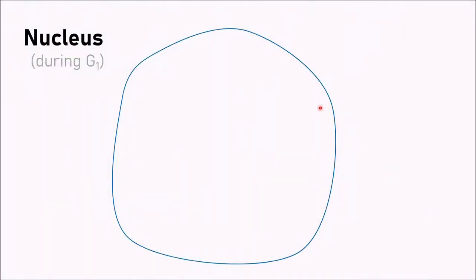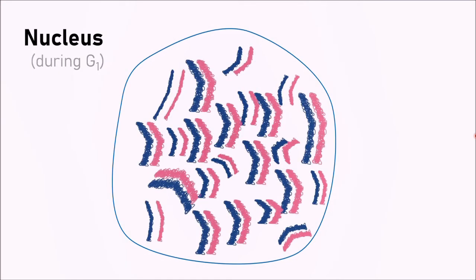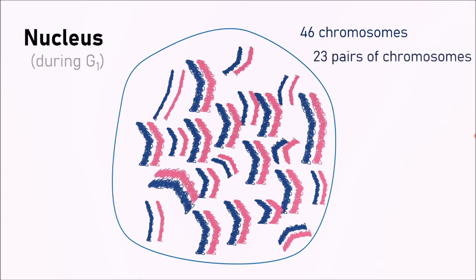Let's have a look at the nucleus again. During G1 in the growth phase, when the cell is not yet preparing for replication, all of the genetic material is clumped into one large ball — the nucleolus. Shown here for clarity are all 46 chromosomes: 46 sticks, forming 23 pairs. In each pair, one is blue and one is pink — one is from the father and one from the mother. Each of these 23 pairs is homologous, and there are also 46 chromatids in total.